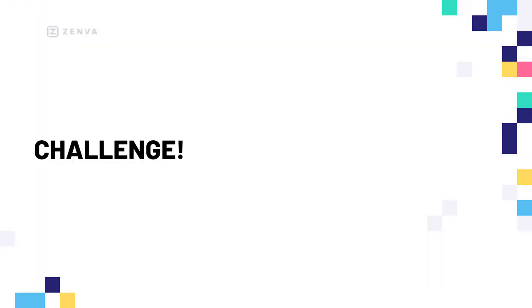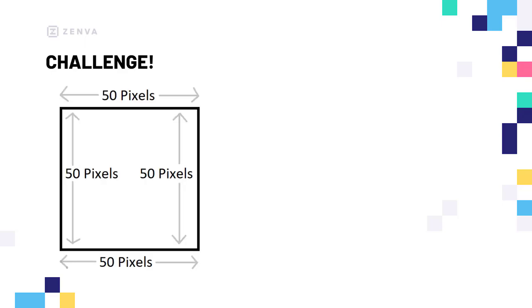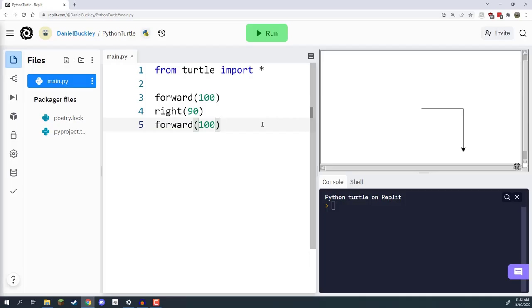Welcome back everyone. In this lesson, we're going to have a bit of a challenge: creating a square algorithm inside Python Turtle. I want you to set up an algorithm that allows our Turtle to draw a square — four sides, each 50 pixels long, creating a 50 by 50 pixel square. Here inside our project, we're going to separate this into a separate file to keep things nice and tidy.